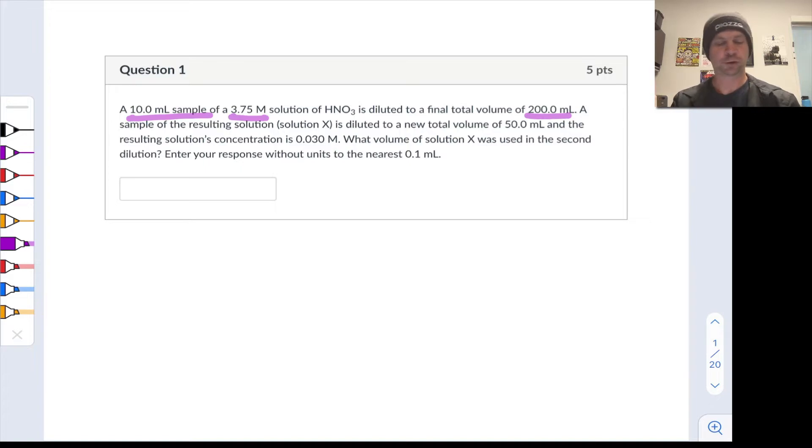So we take this resulting solution, let's call it X, and we dilute that to a total volume of 50 milliliters such that the resulting concentration of nitric acid is 0.030 moles per liter. What we want to know is the volume of solution X that was used in the second dilution to the nearest 0.1 milliliters.